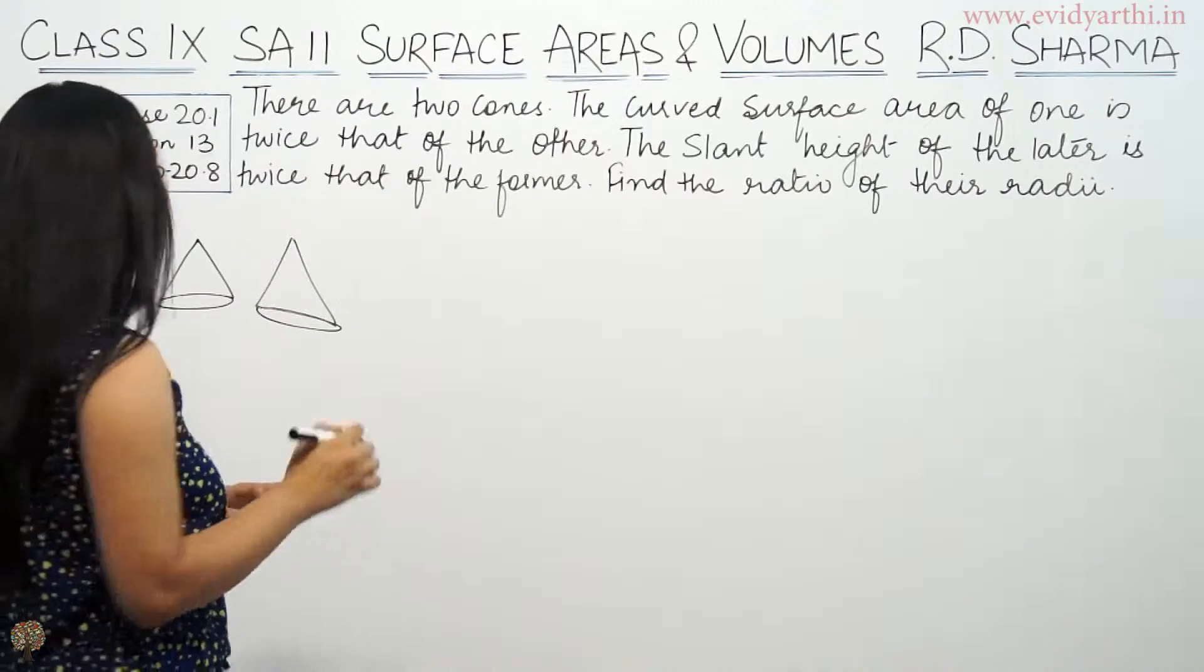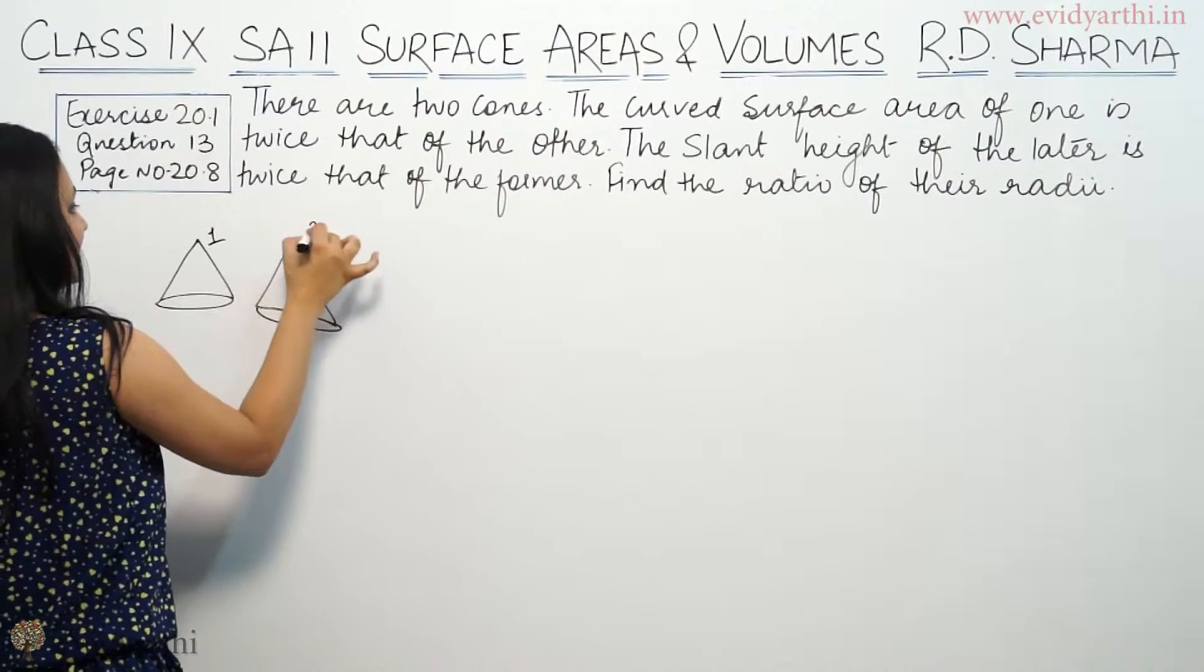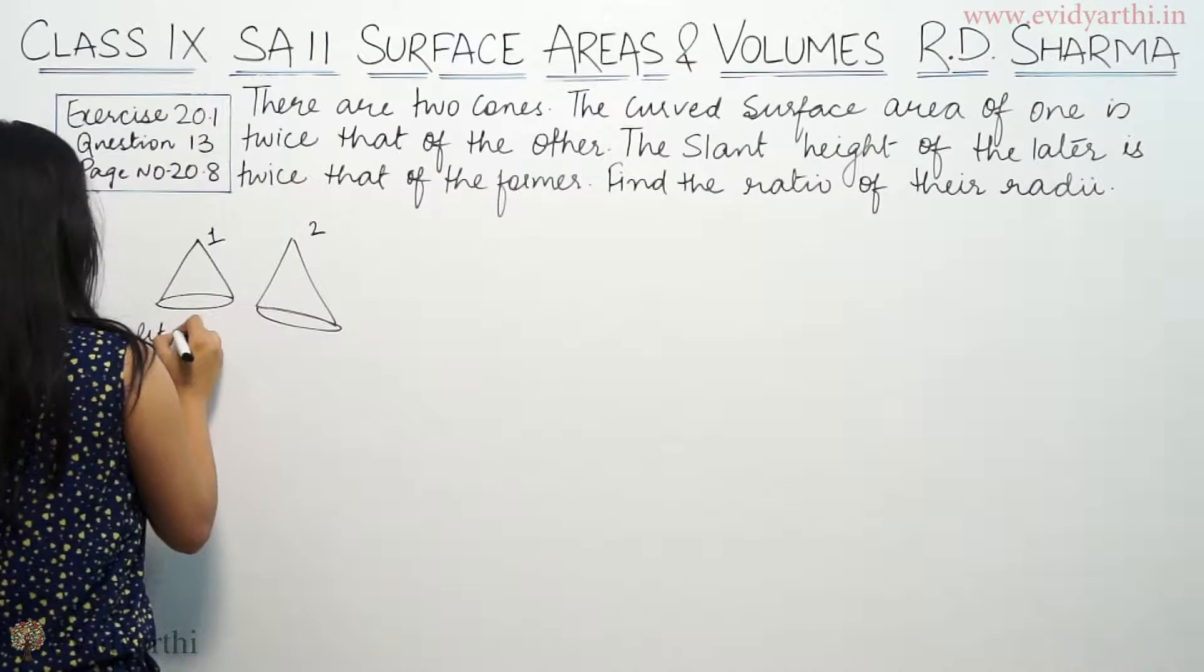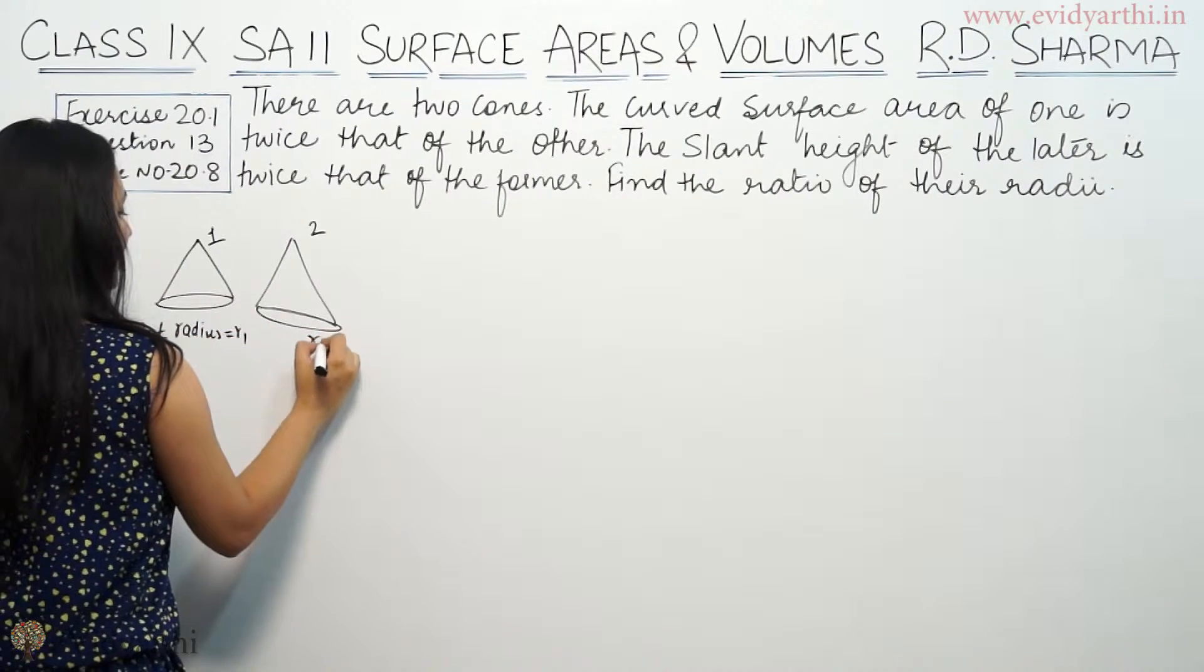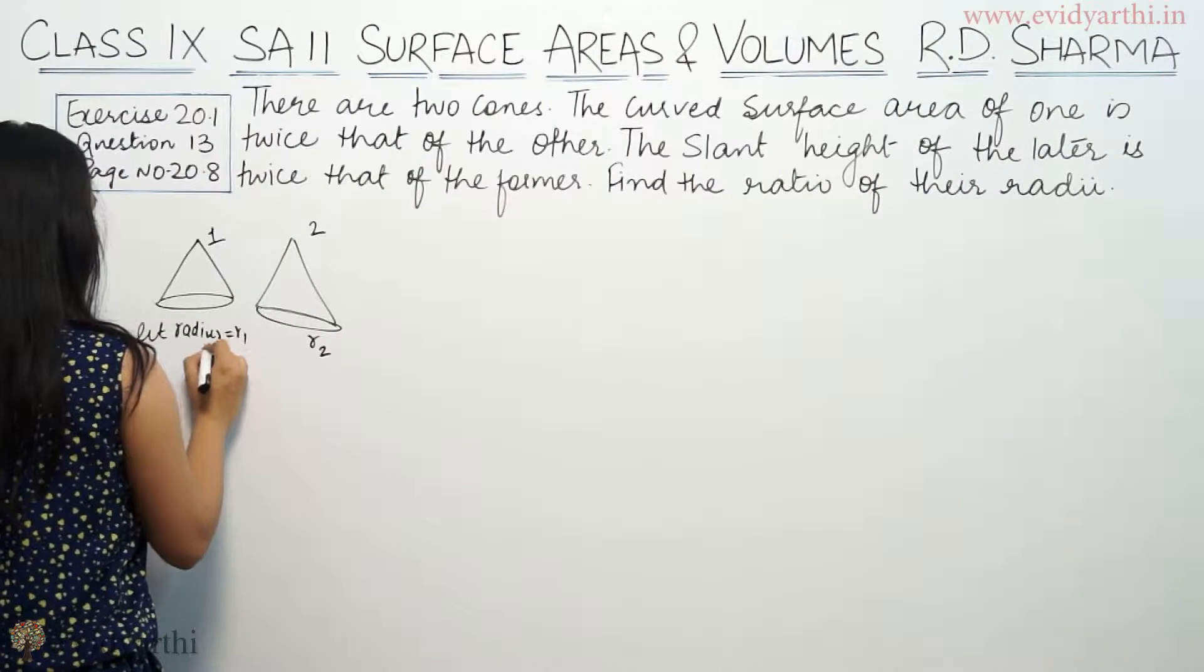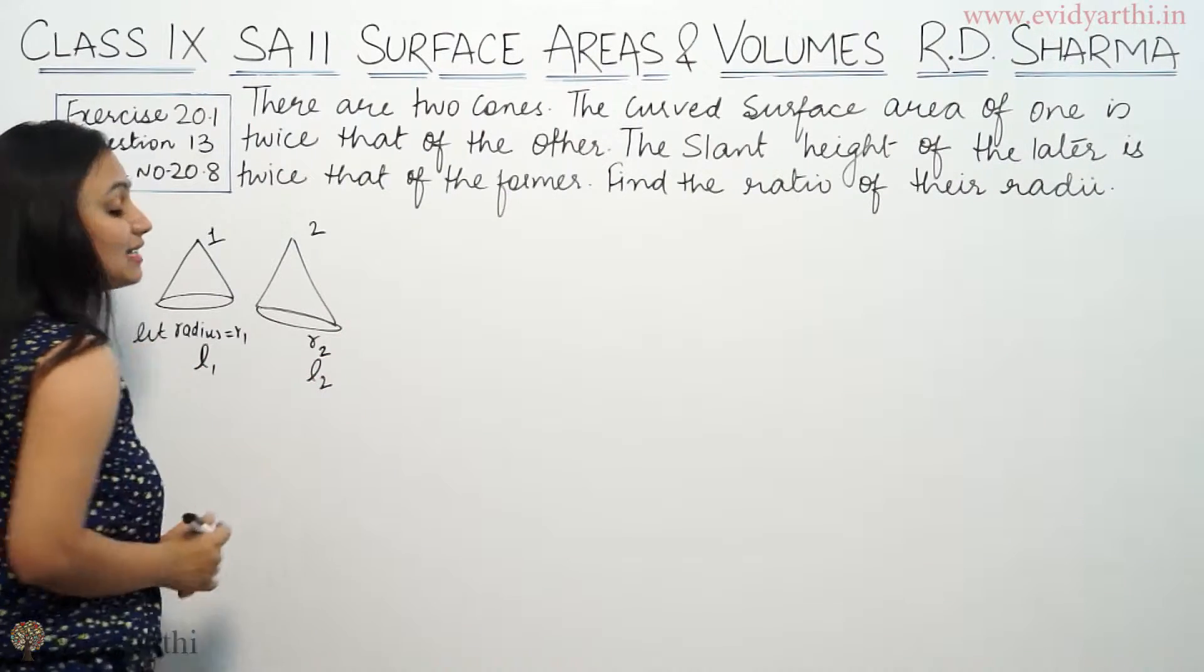It says the curved surface area of one, suppose your first cone here, your second. Now, let us say that this radius is R1 and this radius is R2. Its slant height is L1 and its slant height is L2.